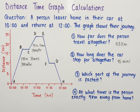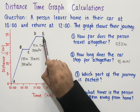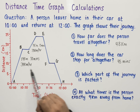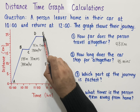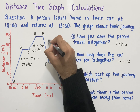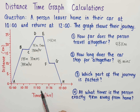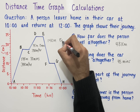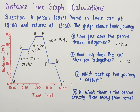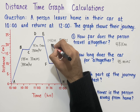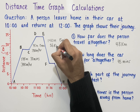For E to F we need to work out the gradient. At point E the car is 24 kilometers from home, and at point F it is 10 kilometers from home. So the car has traveled 14 kilometers, done in a timeframe of 15 minutes — point E is at 11:15 and point F is at 11:30. So 14 kilometers in 15 minutes: multiplying both by 4 gives us 56 kilometers per hour.